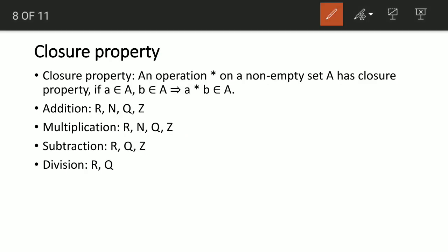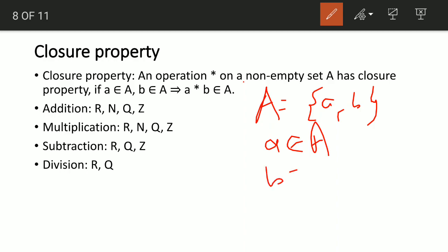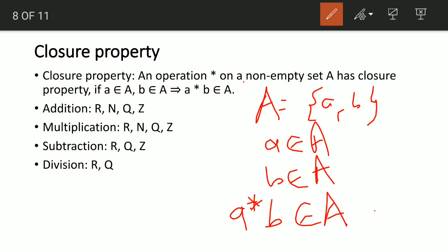The closure property: an operation star on a non-empty set A has a closure property if, when A is an element of A and B is an element of A, then A star B is also an element of A. That means if you have a set containing A and B, and you operate A star B, the result must also be an element of A. When you operate two different elements, your answer is also going to be an element of that set.